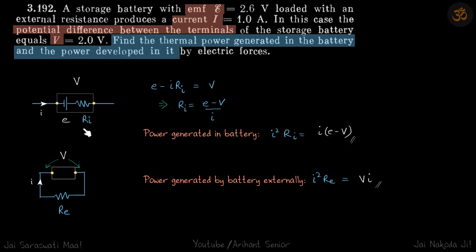Thermal power generated in the battery is I²RI and power developed by it will be I²RE. So that's what we need to find. What is given? Current I is flowing through it, EMF is E, and potential difference across the terminals is V.